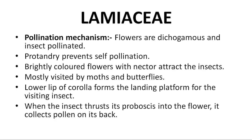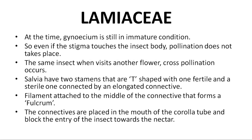The lower lip of the corolla forms the landing platform for the visiting insect. When the insect inserts its proboscis into the flower, it collects pollen on its back. At this stage, the gynoecium is immature (proteandry). When the insect visits another flower and inserts its proboscis, cross-pollination occurs.